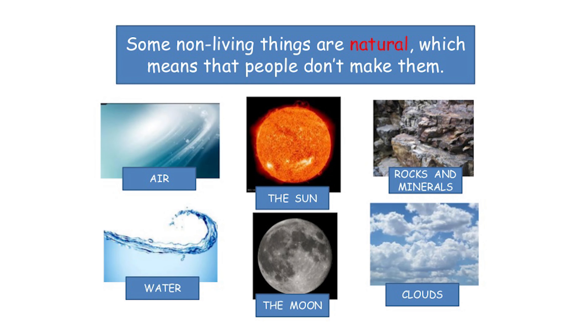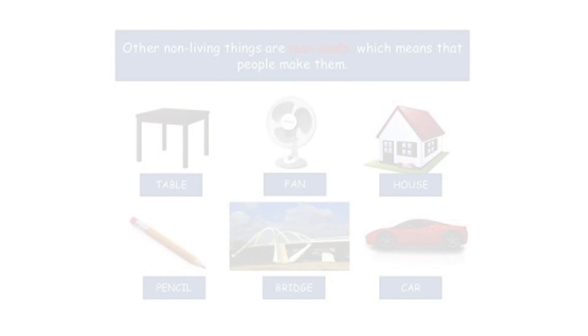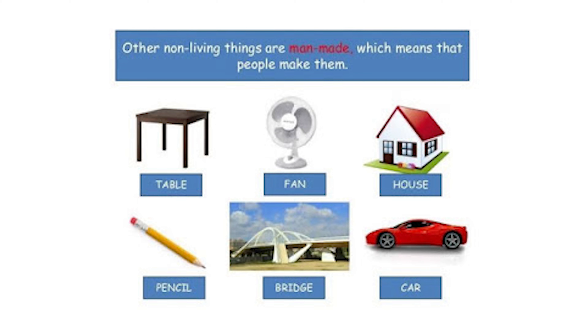These are the things that separate living things from non-living things. Non-living things include naturally available things like mountains, rivers, lakes, and volcanoes, as well as man-made things like cars, books, and furniture. We need both living and non-living things on Earth for our existence. That brings us to the end of this unit.